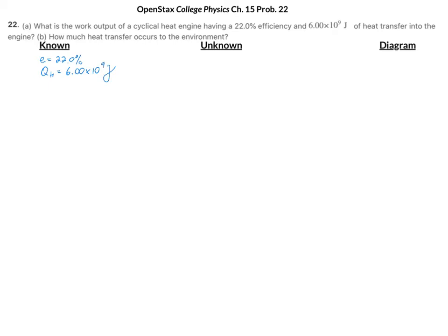We are looking for, in part A, the work output, so we want work. And in part B, we're looking for the heat transfer that occurs to the environment. So that is Q_C.